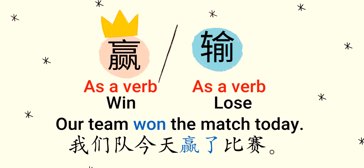I have made a sentence using the word 'win.' In English it is: 'Our team won the match today.' In Urdu: 'Hamari team ne aaj match jita hai.' In Chinese: 我们队今天赢了比赛. The 了 (le) used with yíng indicates that the action of winning the match has been completed.